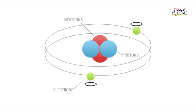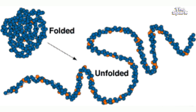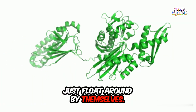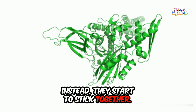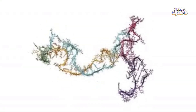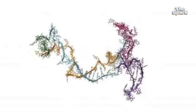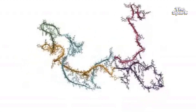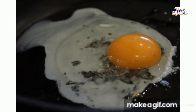These bonds are like tiny magnets, or velcro, and when they break, the protein chains start to unfold. This process is called denaturation. Once the proteins unfold, they don't just float around by themselves — instead they start to stick together. They form a tangled web, almost like a net. That's what turns the egg white from a clear liquid into a solid white gel.